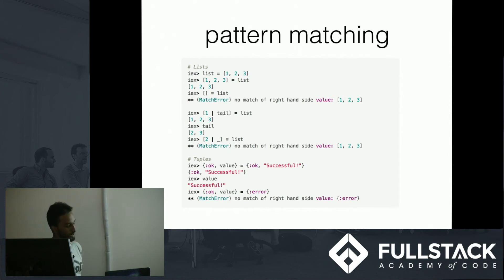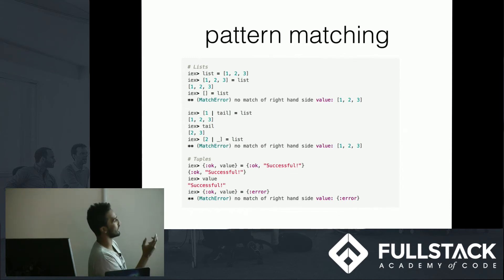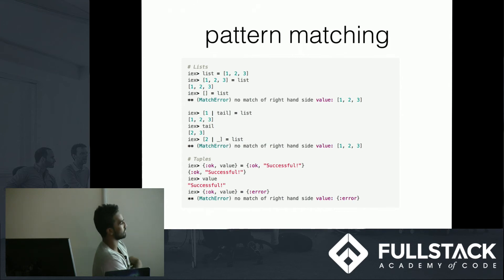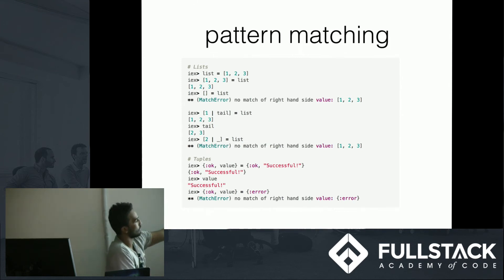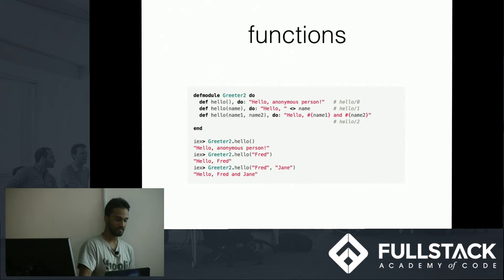Pattern matching is a pretty powerful feature of functional programming languages, and it's in Elixir. You see equal signs constantly, but they're not actually assignment operators — they see the structure, kind of like an equation where both sides have to have the same pattern or structure. You've used something similar in JavaScript when you destructure. You can get certain elements from a list and put them in variables.